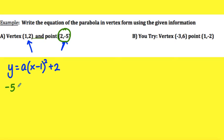So negative 5 is y times a, plug in the 2 for x, squared plus 2. So we get negative 5 equals 2 minus 1 is 1, 1 squared is 1, so it's just a plus 2. I subtract 2 from both sides, and so I get negative 7 equals a.